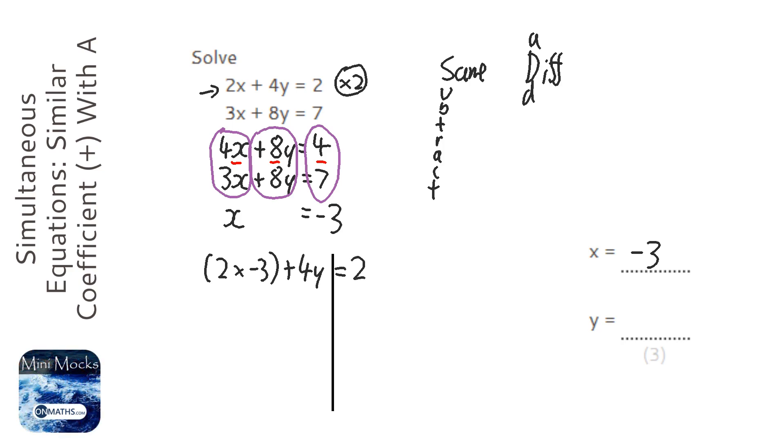I'm just going to put my lines in. Okay, so we've got minus 6 here plus 4y equals 2. So I'm going to add 6 both sides. So we've got 4y equals 8. Divide 4 both sides. And we've got y equals 2.